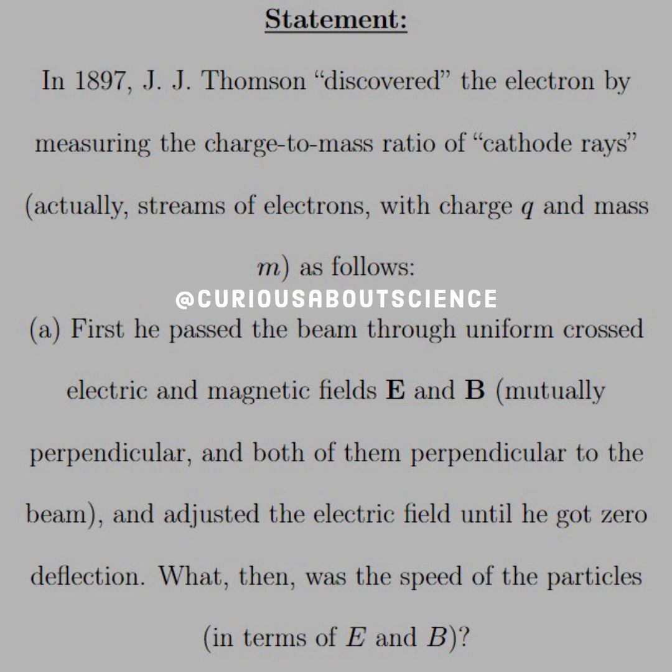Part A. First, he passed the beam through uniform crossed electric and magnetic fields E and B, mutually perpendicular, and both of them perpendicular to the beam, and adjusted the electric field until he got zero deflection.